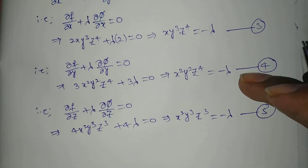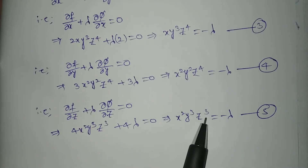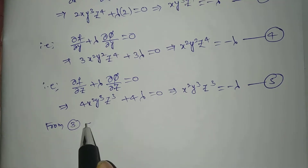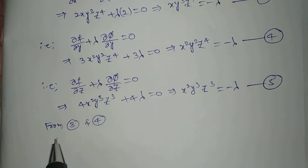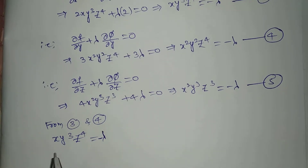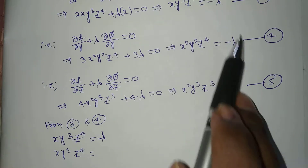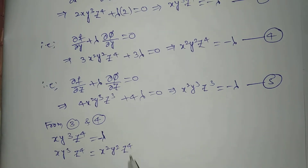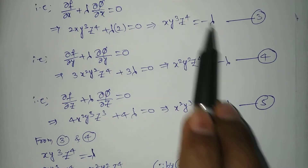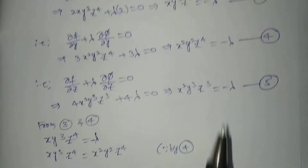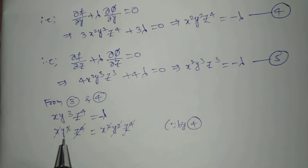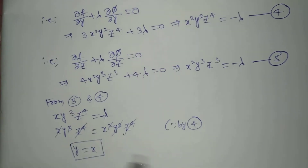These three equations all equal minus λ. Solving equations 3 and 4 together: from equation 3, x y cubed z to the power 4 equals minus λ, and from equation 4, x squared y squared z to the power 4 equals minus λ. Since they are equal, we cancel z to the power 4 from both sides, cancel one x, and cancel one y. This gives y equals x.